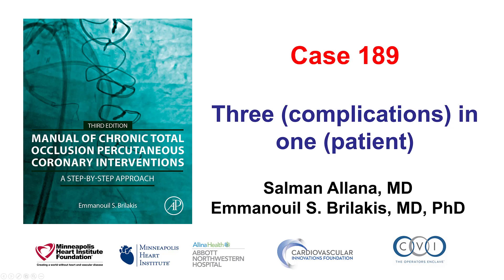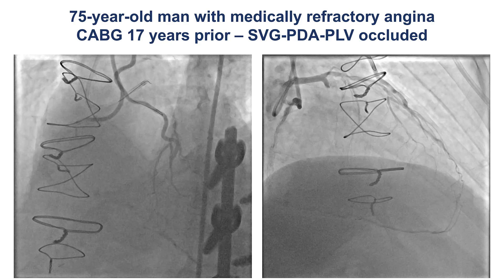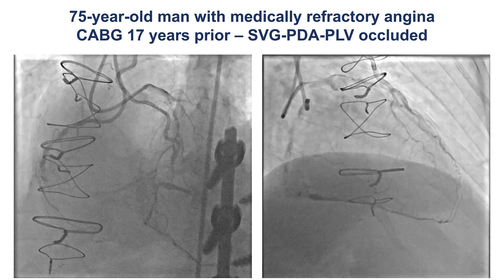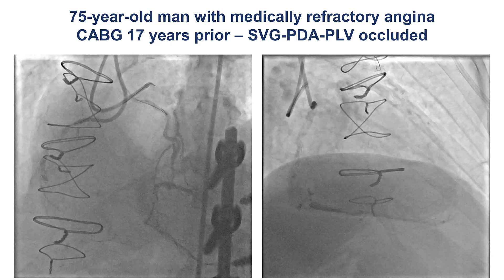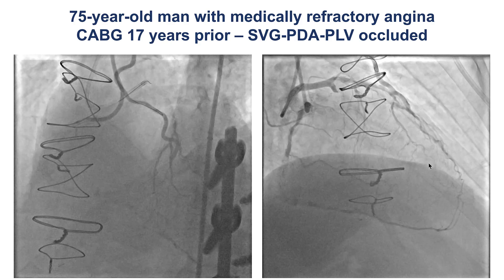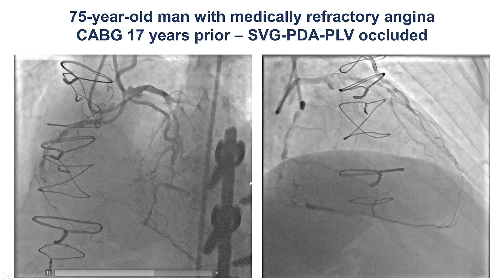This is Salman Alana and Manos Brilakis, and this is case 189 for the Manual of CTO Interventions. This is a case of three complications occurring during one case in one patient. The patient was an elderly gentleman with previous coronary bypass. He had a patent LIMA to LAD, patent saphenous vein graft to OM, but an occluded vein graft sequential to the PDA and posterior lateral, with a CTO of the mid-right coronary artery within a previously placed stent.